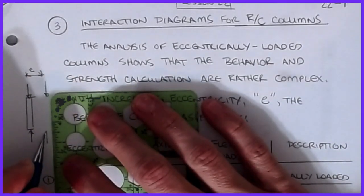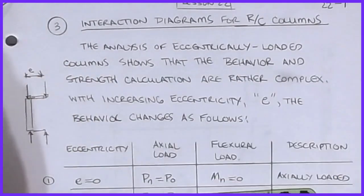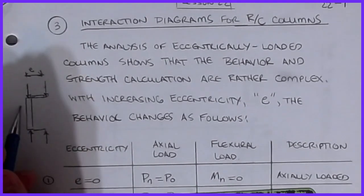As e increases, that load acting here puts more and more moment into this beam and it starts to become more like a beam than it does an actual column.